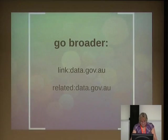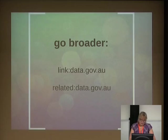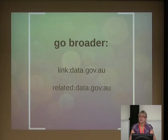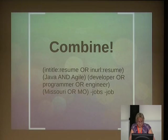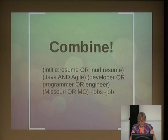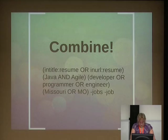You can also go broader — the related: operator finds all sites related to a given site. For example, searching related:data.gov.au will surface all the state data portals and AusGov and similar. This gives a nice overview of a cluster of websites that might help. You can combine all these operators: one example is a recruiter in Missouri who uses a complex Google Alert combining coding skills and job title variants — developer, programmer, or engineer — to get notified whenever a matching resume appears online.